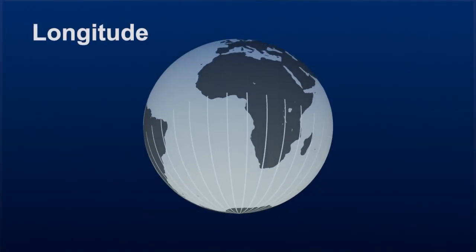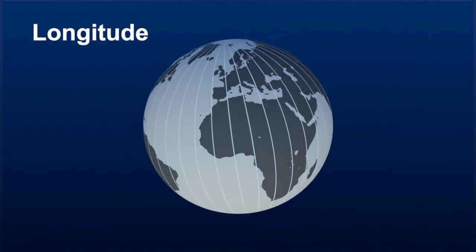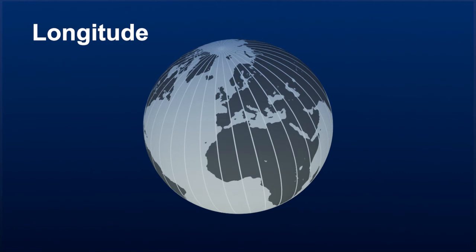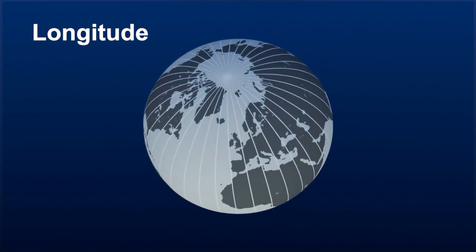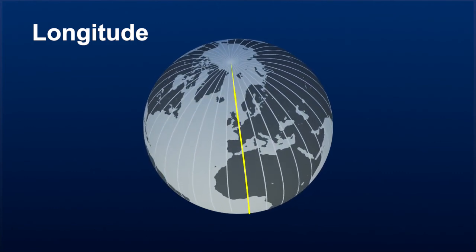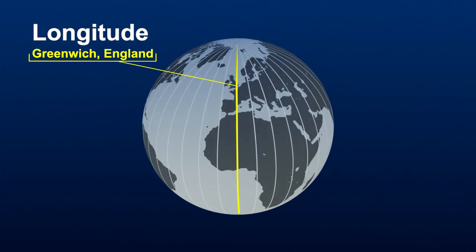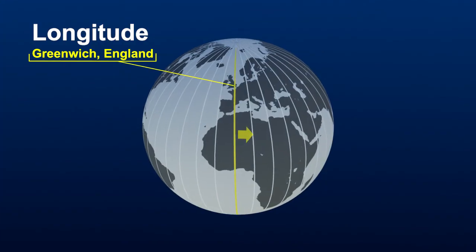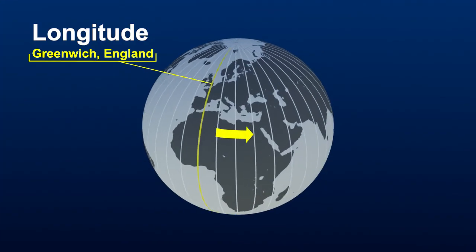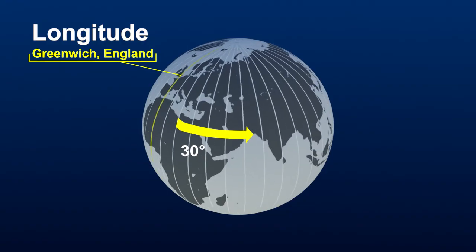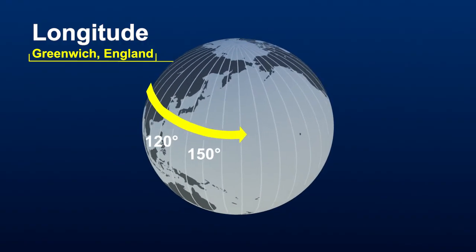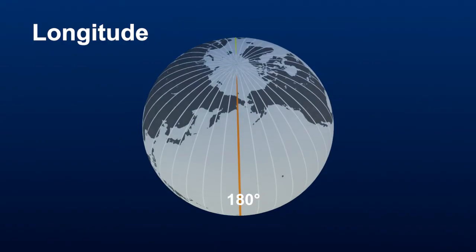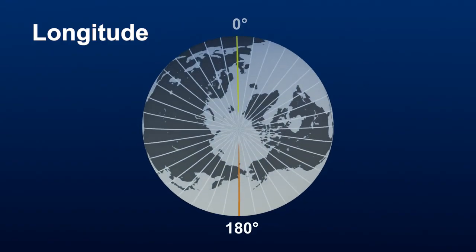Longitude lines, also called meridians, measure the distance east and west of the prime meridian. In the United States, we measure from the prime meridian in Greenwich, in the United Kingdom. This is 0 degrees of longitude. If you travel east, the degree of longitude would increase until it reached 180 degrees on the opposite side of the globe from the prime meridian.